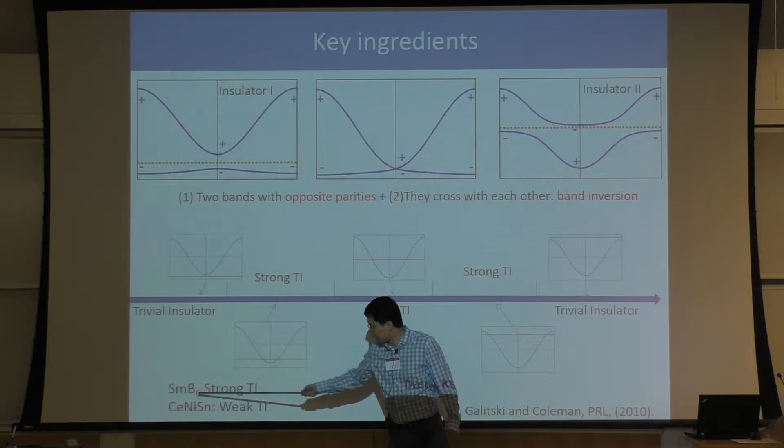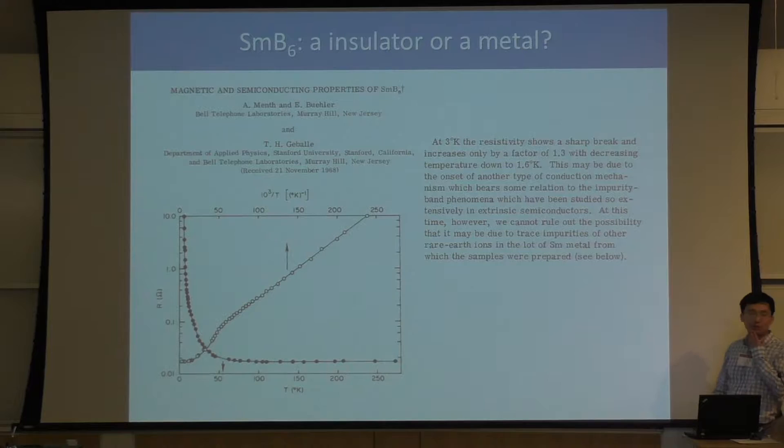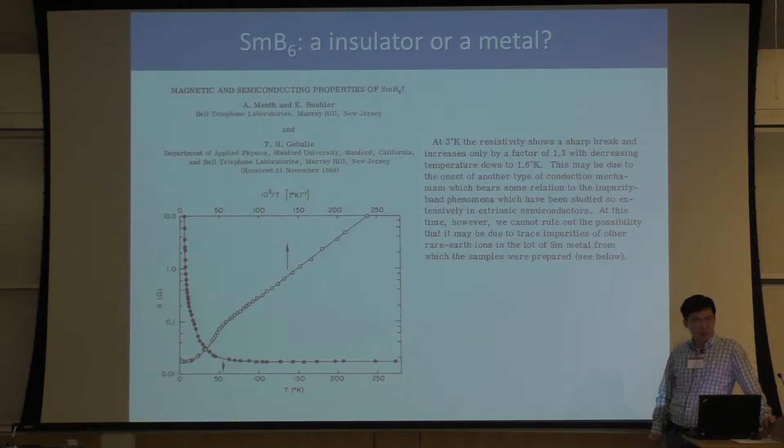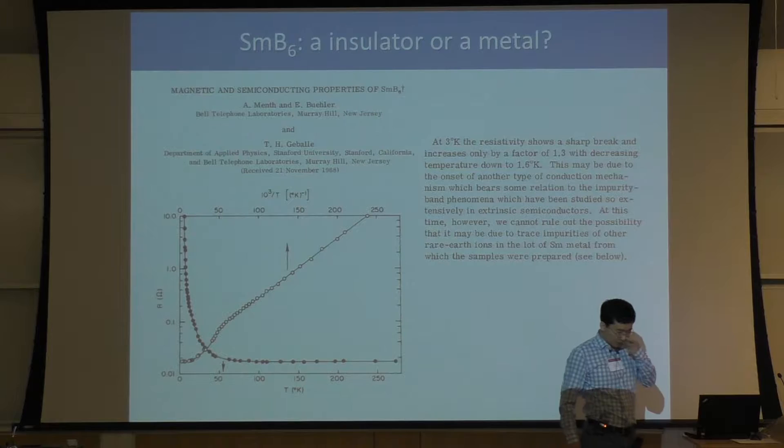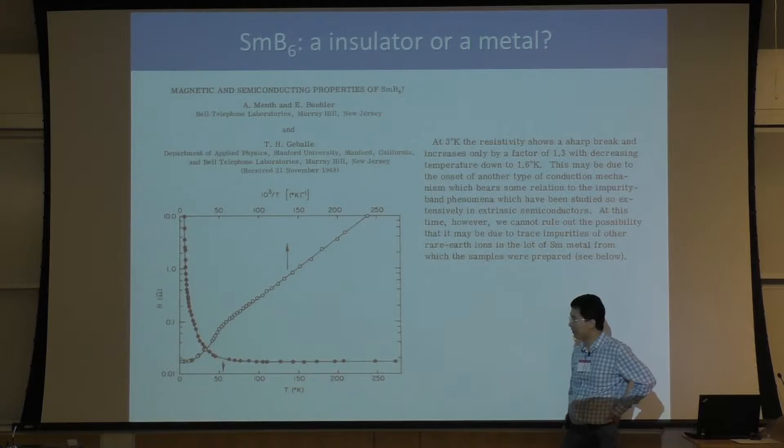Today I am going to focus mostly on the first compound, samarium hexaboride. This compound is actually not a new material — it is a very, very old material, actually one of the first ever studied strongly correlated materials. The first paper on samarium hexaboride written in English was published in the late 1960s.